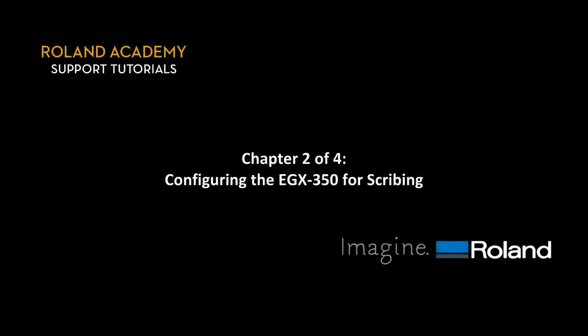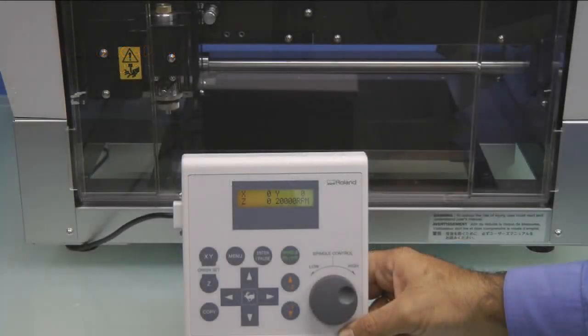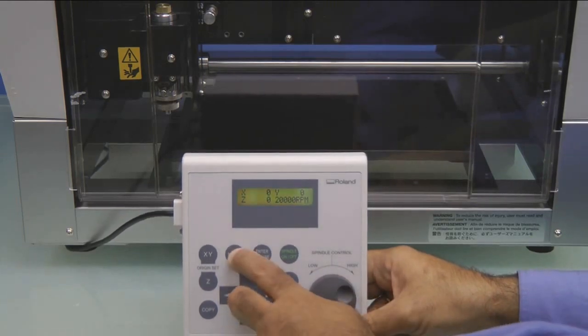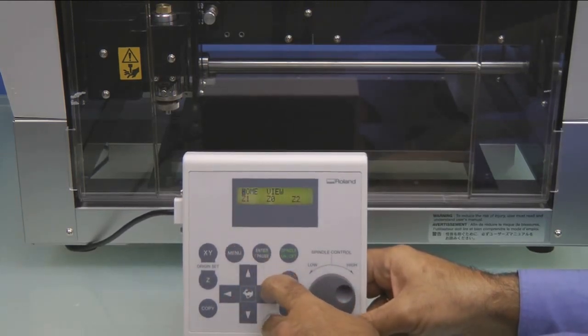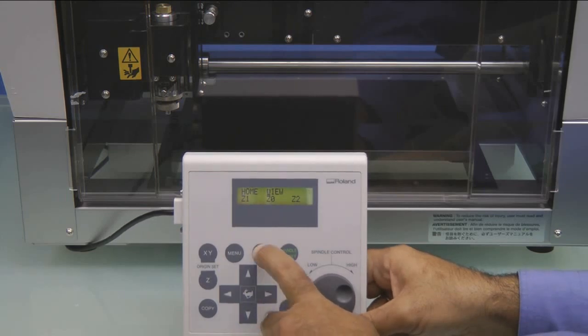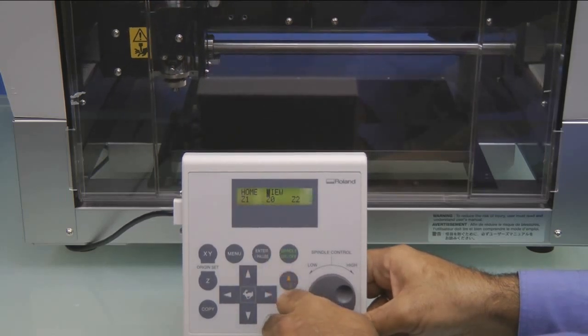Configuring the EGX350 for scribing. On the Handy panel, press the Menu key until you see the Home View Z1, Z0, Z2 menu. Move the cursor to View and press Enter.